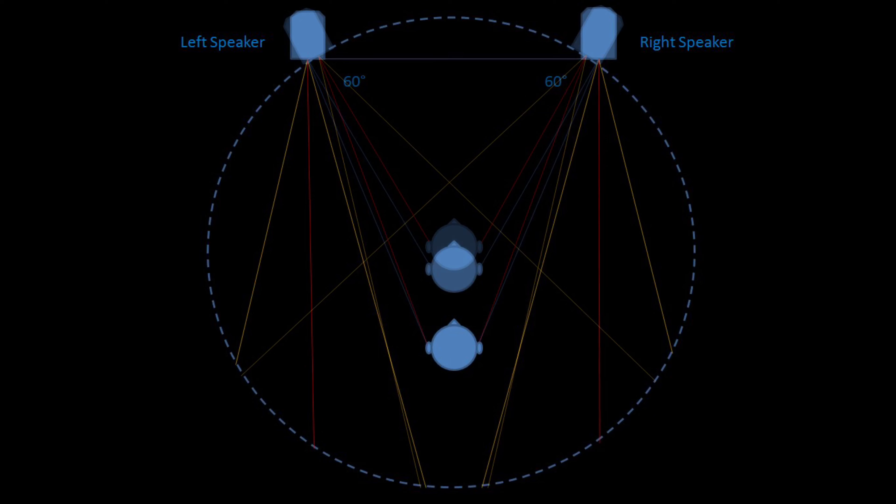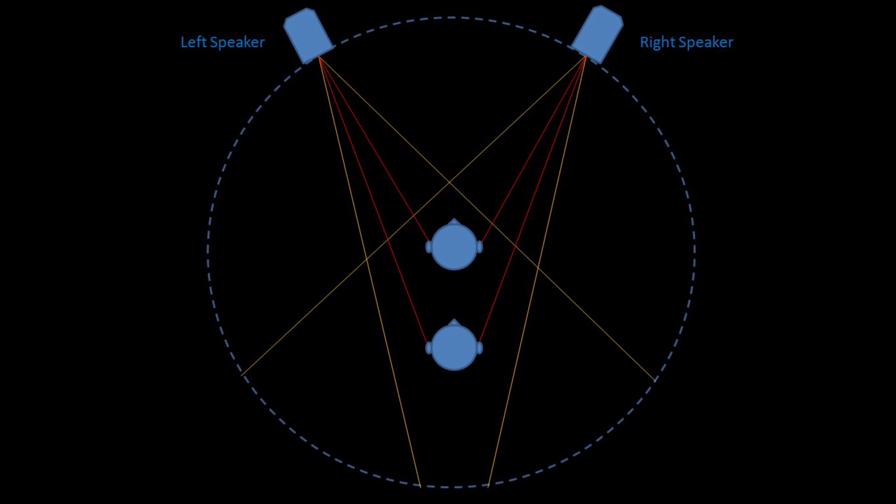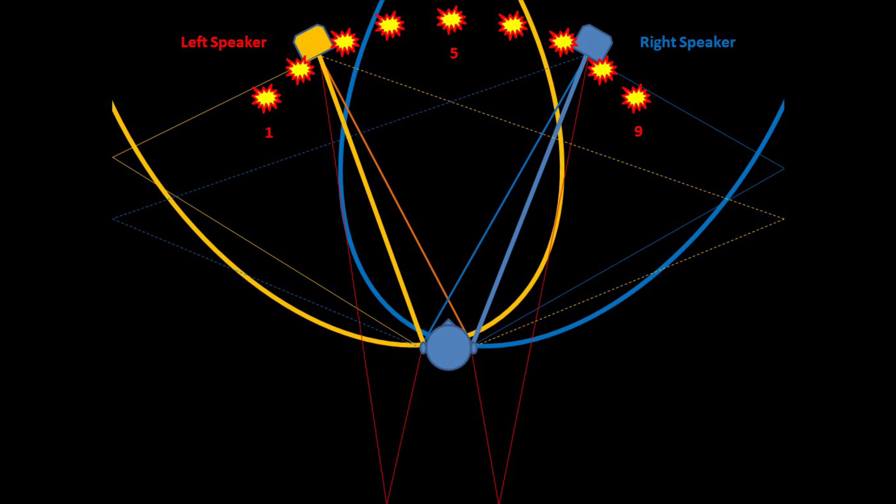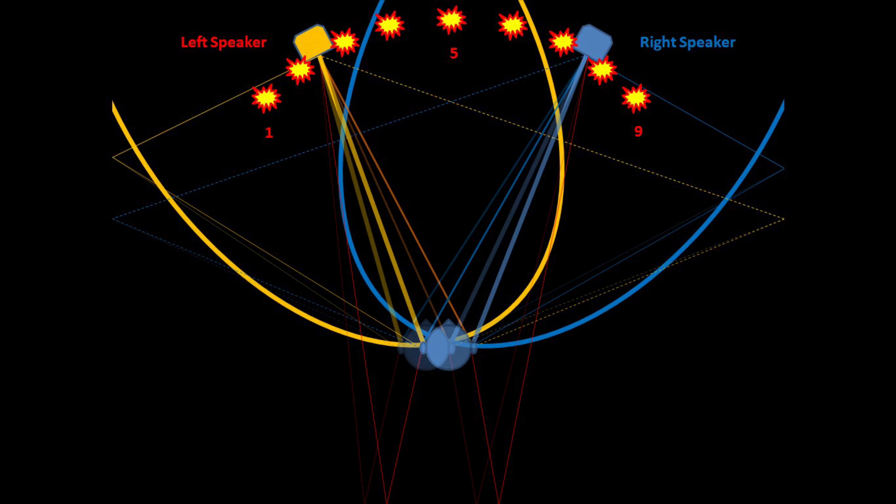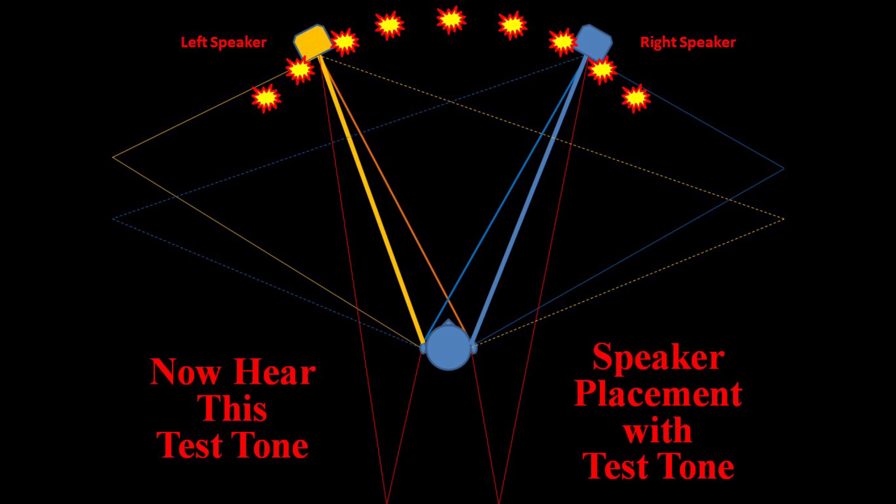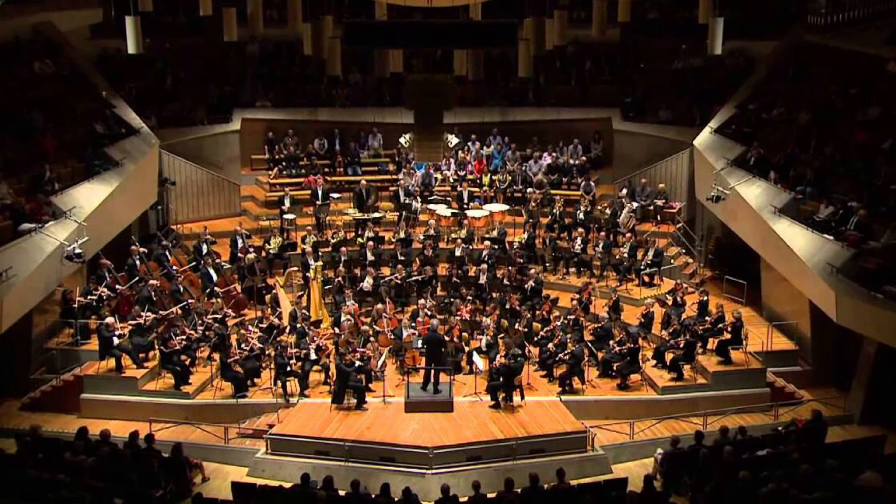Speakers' toe angles and their distance from the sidewalls are most critical factors for narrower directivity speakers to optimize the sound. For the in-room stereo sound listening, it is much more sensitive for narrower directivity speakers for room placement, so you need to use this test tone and be patient if you want to get the best sound from your room.